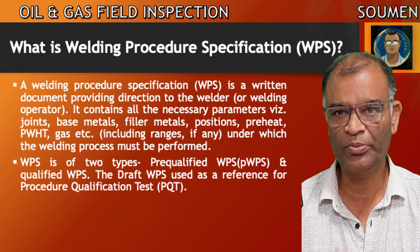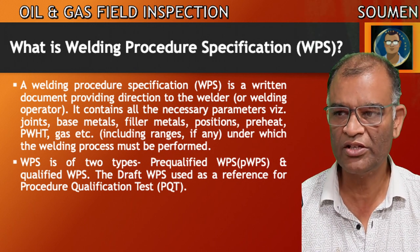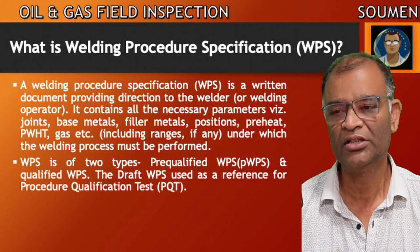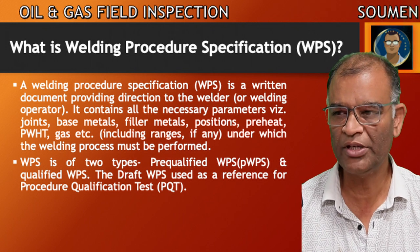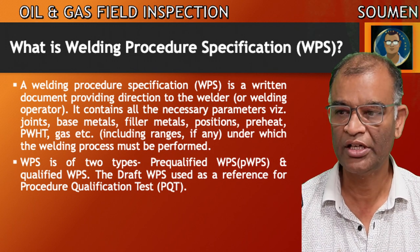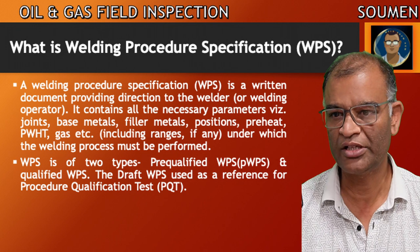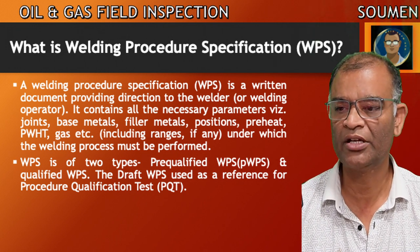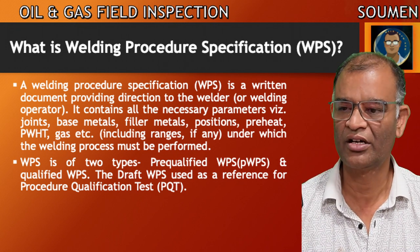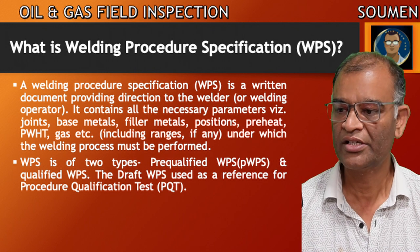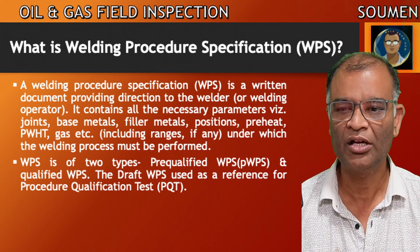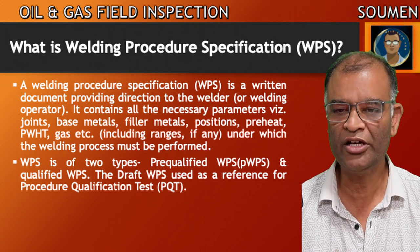First question: what is WPS, or welding procedure specification? A welding procedure specification (WPS) is a written document providing direction to the welder or welding operator. It contains all the necessary parameters — for example, joints, base metal, filler metal, position, preheat, post-weld heat treatment, etc. — including any ranges under which the welding process must be performed. This is the basic concept behind preparing a WPS.